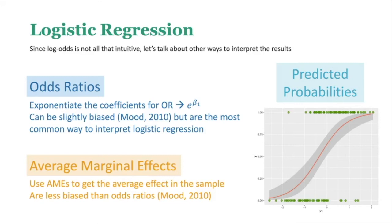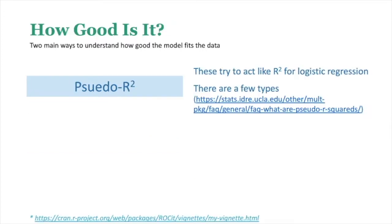After making interpretations, the question is: how good is the model? There are two main ways to assess model fit. The first is pseudo R-squareds, which try to act like R-squared for logistic regression. There are several types, each with strengths and shortcomings, and many journals expect you to report them.